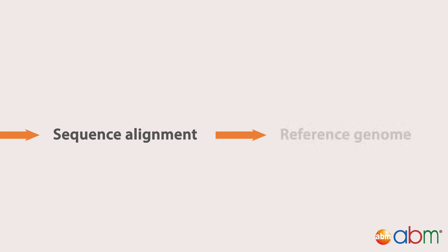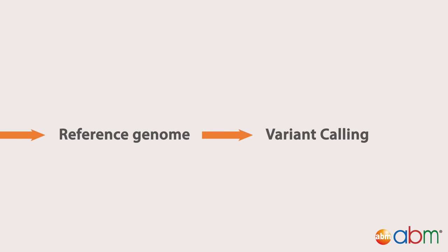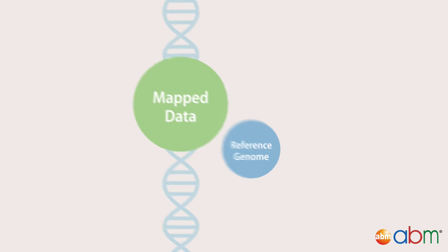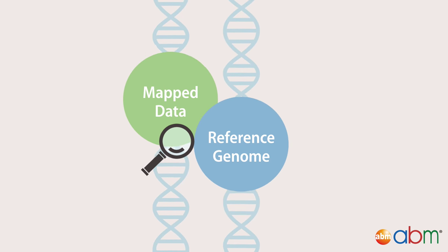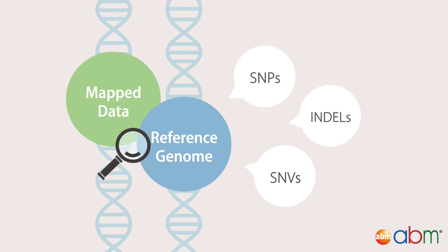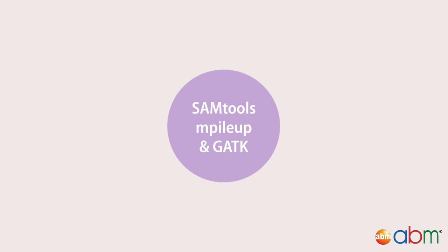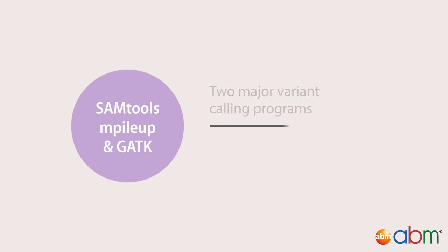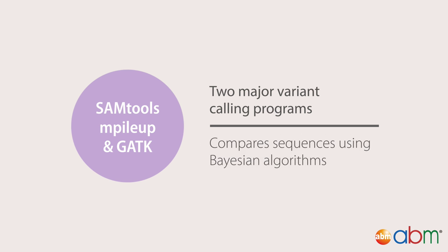After alignment to a reference genome, the next step is variant calling, where a program examines your map data and the reference side by side to determine the existence of SNPs, de novo SNVs, and indels. SAM tools mPileup and genome analysis toolkit are two major variant calling programs available that use Bayesian algorithms to compare your aligned sequence against the reference.